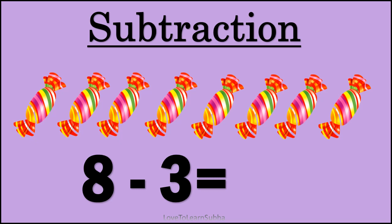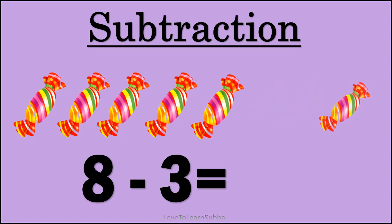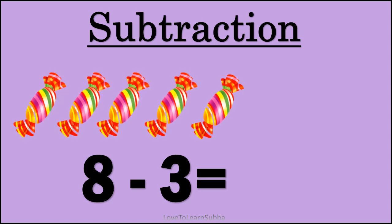From this we have to remove three chocolates. Now let's start removing the chocolates: one, two, three. Now let's calculate the remaining number of chocolates: one, two, three, four, five. So eight minus three gives five.